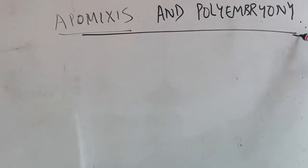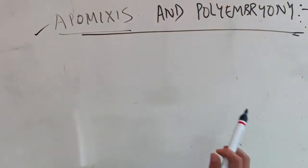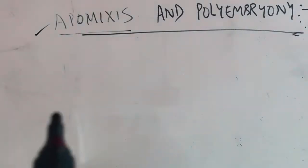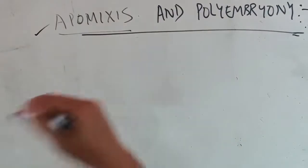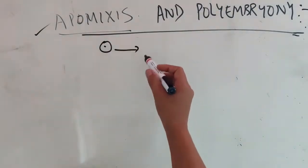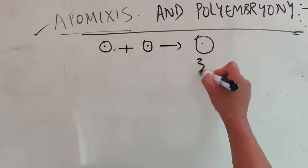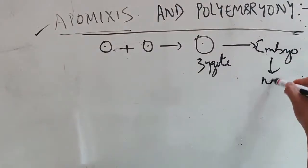Hello everyone, welcome back to Syamsini Tutorials. Today we are going to study what is apomixis and polyembryonia. In normal sexual reproduction, gametes fuse to form a zygote — this is known as syngamy — and the zygote forms an embryo which develops into a new individual.